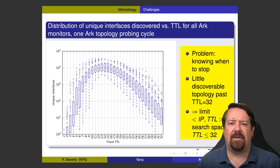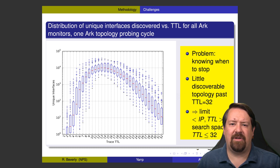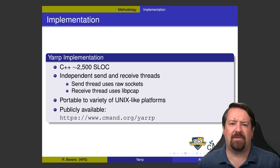Then we have the problem of knowing how to stop. Traditional traceroute, by going sequentially, can wait until it gets the ICMP port unreachable message signaling it has reached the destination. However, since YARP is sending things in random order, it doesn't really know when to stop. So instead we rely on statistics: we know there is little discoverable topology past TTL 32, so the first step is to limit TTLs to 32 or less. This is configurable within the YARP program, and the majority of topology can be discovered with even fewer hops than 32. The YARP tool is publicly available and the source is now open on GitHub.